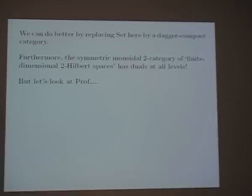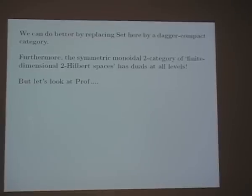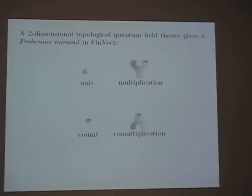Profunctors don't have duals at all levels, but you can get something better by working with 2-Hilbert spaces — a categorified version of Hilbert spaces — and Bruce Bartlett and others have done a lot of work on those. But I just want to say one last word about profunctors. As you've probably heard, you get nice examples of the compact dagger category formalism by looking at two-dimensional topological quantum field theories and two-dimensional cobordisms.